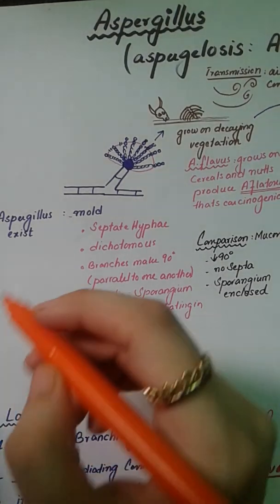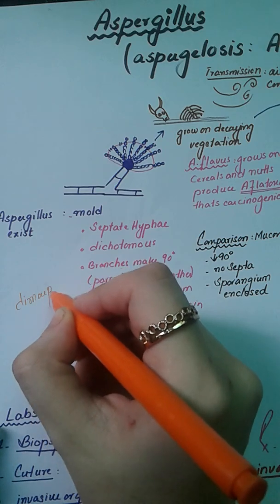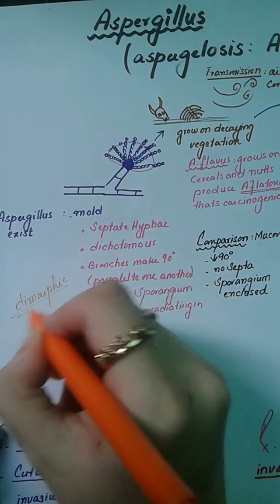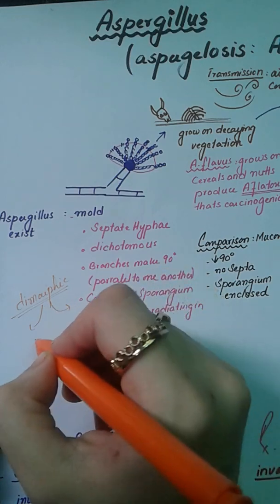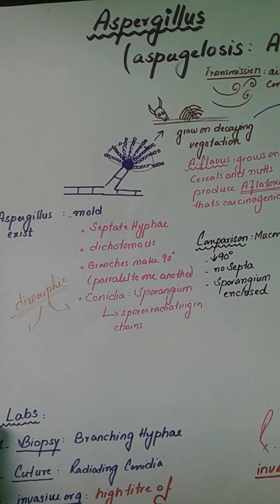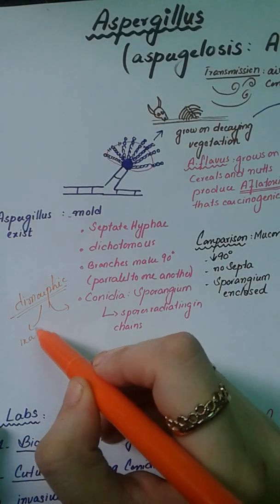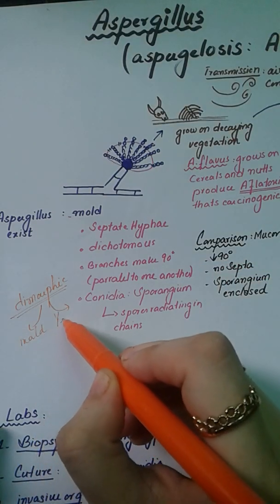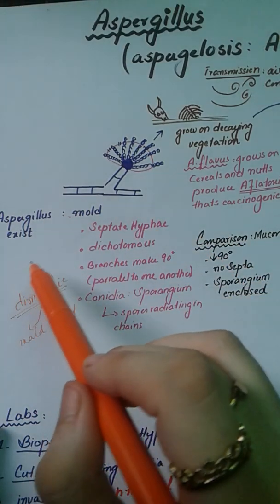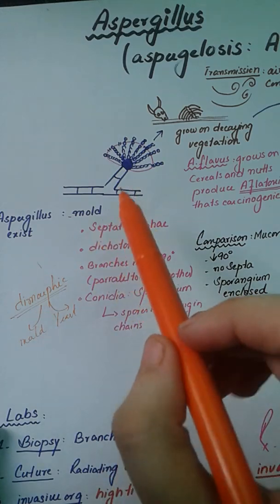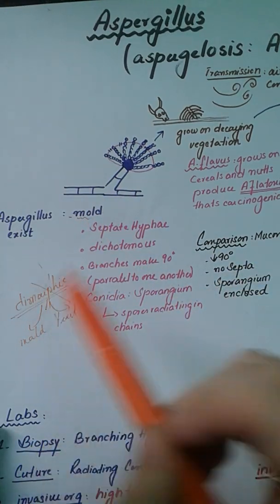Some fungi are dimorphic, meaning that inside or outside the body they take a specific shape depending on temperature. Dimorphic fungi exist as mold outside the body and as yeast inside the body. However, Aspergillus fumigatus exists in the form of mold both inside and outside the human body, meaning it is not dimorphic.